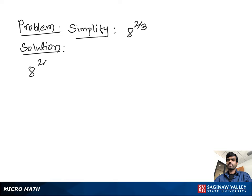Simplify 8 raised to the 2/3 power. First, we find the cube root of 8, then raise to the second power. The cube root of 8 is 2, because 2 times 2 times 2 is 8. And 2 raised to the second power is 4.